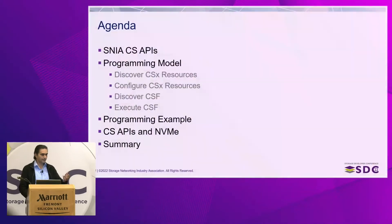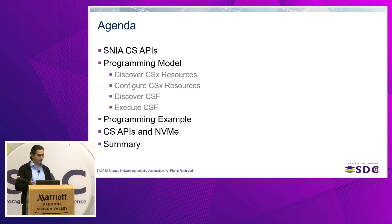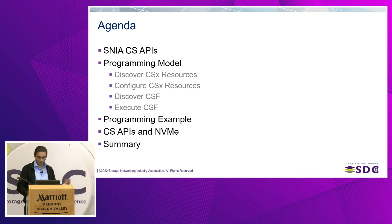In our agenda today, we'll touch on the computational storage APIs and the programming model — specifically how you can discover computational storage resources, how you can configure them, and once configured, how you can use them by discovering the specific CSFs. We'll also cover how you can execute that from an application perspective, walk through a programming example, and cover how these APIs and NVMe work together. Bill will cover more detail later, but this is from the API perspective. And lastly, we will conclude.